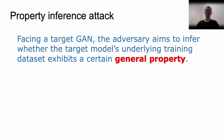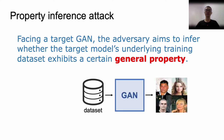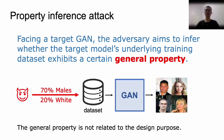Our attack is defined as follows. Based on a target GAN, the adversary aims to infer whether the target GAN's underlying training dataset has a certain general property. For example, facing a target GAN which is used to generate human faces, our target general property can be the proportion of males or white people in the dataset.